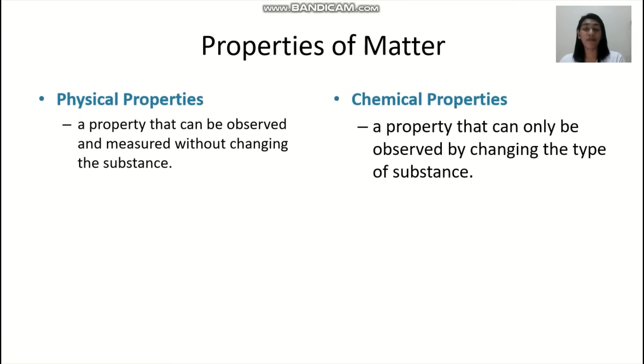Now for the properties of matter, we actually have two types. You have the physical properties and the chemical properties. Physical properties are properties that can be observed and measured without changing the substance, while chemical properties can only be observed by changing the type of the substance.